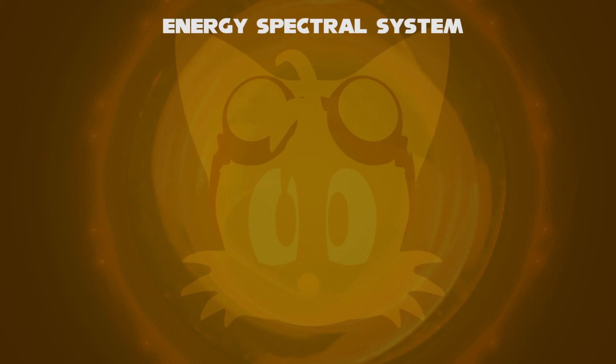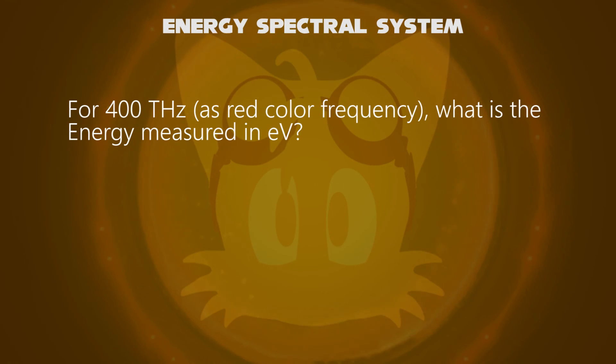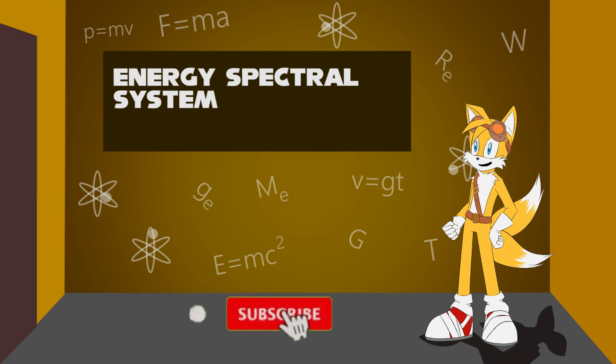Now, before ending this video, I leave you a question: for 400 terahertz being the frequency of red light, obtain the energy in electron volts. The answer is 1.66 electron volts. So, this video we have learnt about energy in spectral system. Like, comment, and subscribe now.